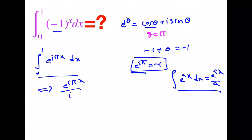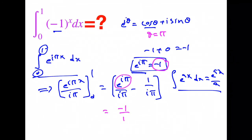With limits 0 to 1, by applying the limits I get e^(iπ)/(iπ) minus 1/(iπ). Now I am going to replace e^(iπ) with -1.